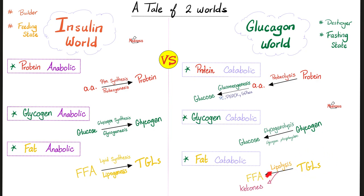Triglycerides break down via lipolysis into free fatty acids. When you do this, you will unfortunately secrete some ketones. When it comes to ketones, there is good news and bad news. In the absence of glucose, ketones become your brain's favorite source of energy — that's the good news. The bad news is too much ketones can lead to ketoacidosis. The ketones are acetone, acetoacetic acid, and beta-hydroxybutyric acid — these are acids that can cause acidosis.